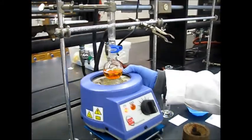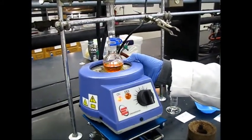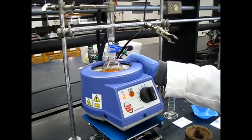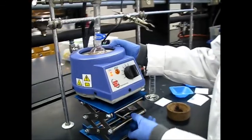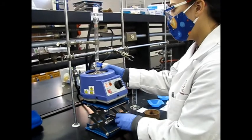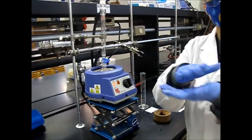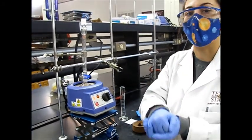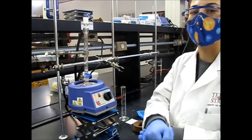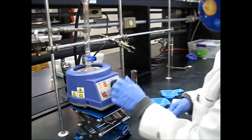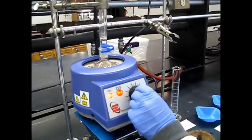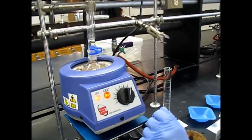And then you raise out the heating mantle and make sure that the round bottom flask is sitting directly on the heating mantle. Otherwise it won't heat properly. And then you're going to turn it up to around 6 and let it reflux.